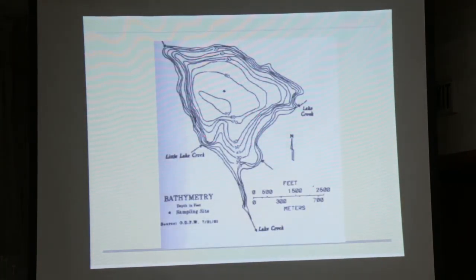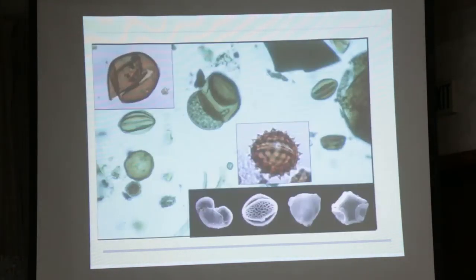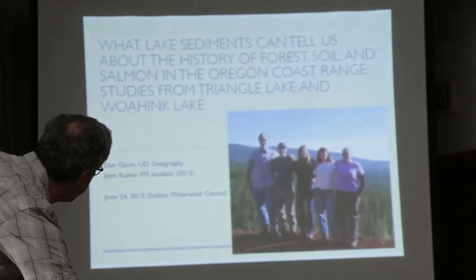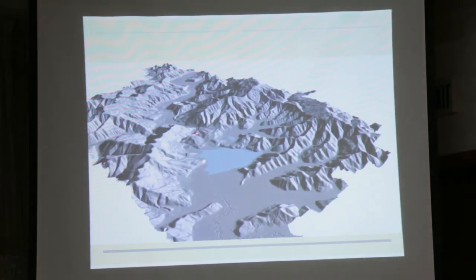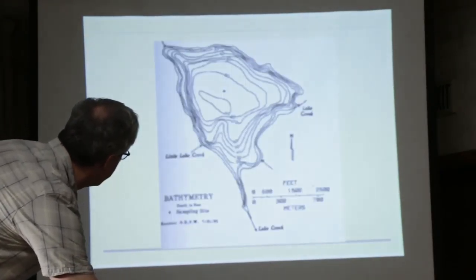Here is a bathymetric map of Triangle Lake — it goes down to 95 feet, really steep-sided. This is an old map I'm currently trying to update. What happened after that landslide was that it didn't just dam up the valley and create Triangle Lake, but the lake extended all the way up like a modern-day reservoir would extend up into the hills. It's taken thousands of years to fill up, and now Triangle Lake is like the last holdout of the former, much larger lake.